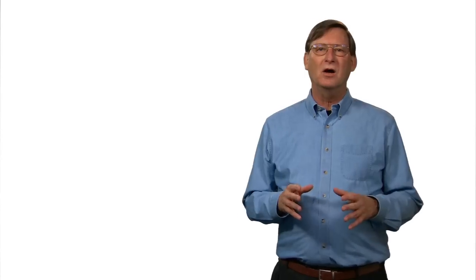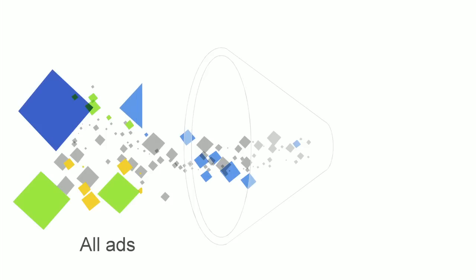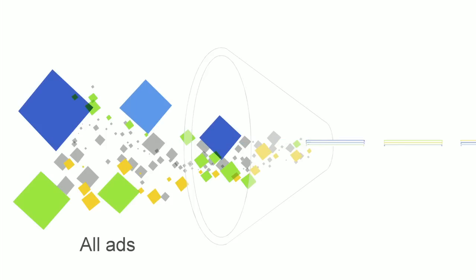As an AdSense publisher, you can place AdSense code onto your pages that will fetch ads from Google. We have ads from a large pool of advertisers, and so our system first narrows down the number of ads to see which ones are relevant to the content on your pages.